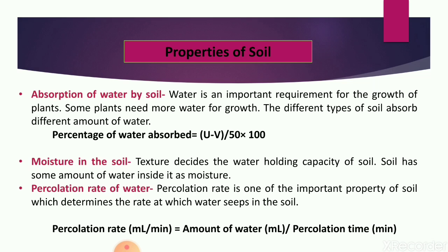Another property is color. Different soils have different colors, and these colors depend on the minerals and nutrients present in the soil. The black color of soil is because of rich content of humus, which is an organic material. Red soil is red in color because of iron oxide — iron oxide is red in color, so if iron oxide is present, the soil will be red. The color of soil depends on the nutrients and minerals present in it.